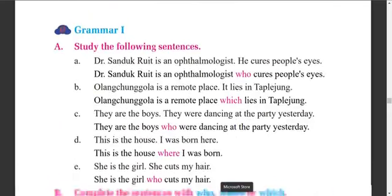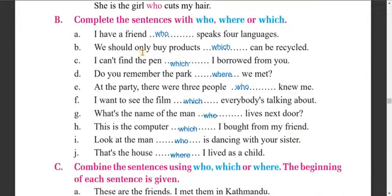Now dear students, let's do the exercise on relative clauses - use who, which, or where. A - I have a friend who speaks four languages. 'Who' is used before a person in the subjective case. B - We should only buy products which can be recycled. With things, we use 'which'. C - I can find the friend which I borrowed from you - this also refers to a thing.